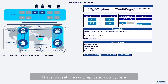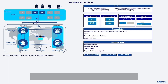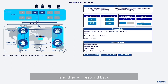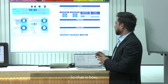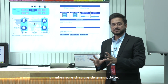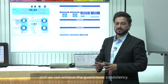I have just set the sync replication policy and will run the update request so you can see how the sync replication flow works. Running the PATCH request — it comes to the local site via the NUDR interface, is written to local storage, then replicated to other replicas which respond back. Once responses are received, the global commit happens and the response is sent back to the application. This ensures data is updated to all sites before the response is sent, achieving guaranteed consistency.